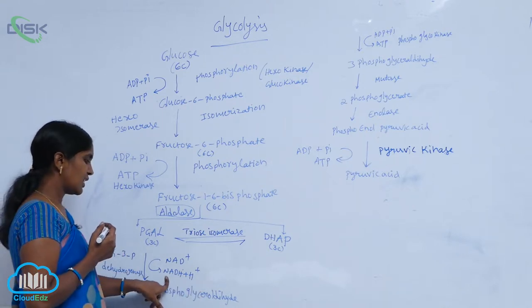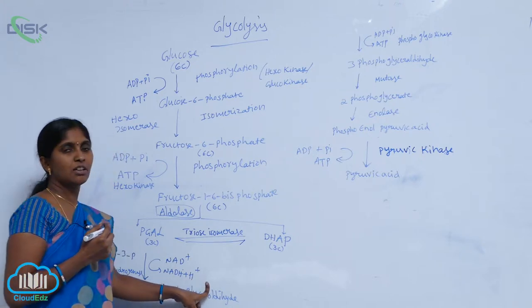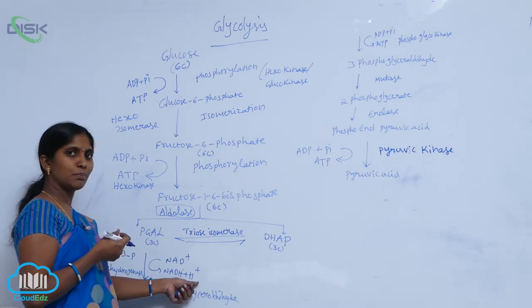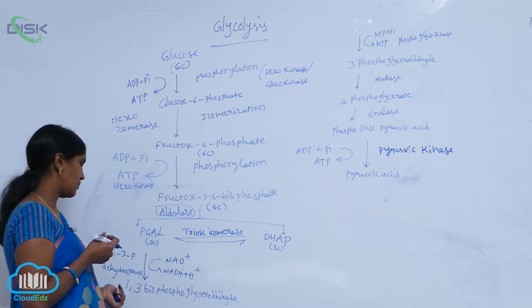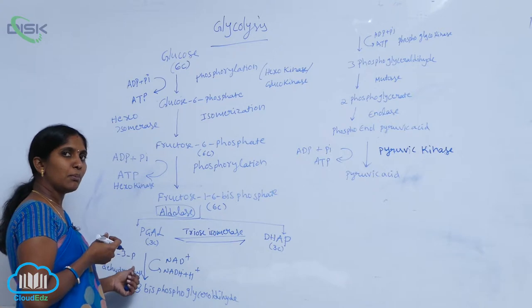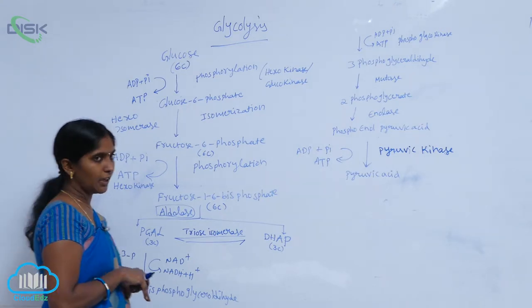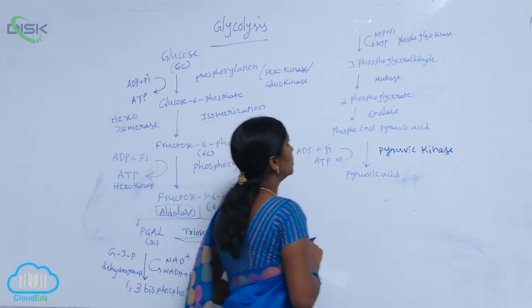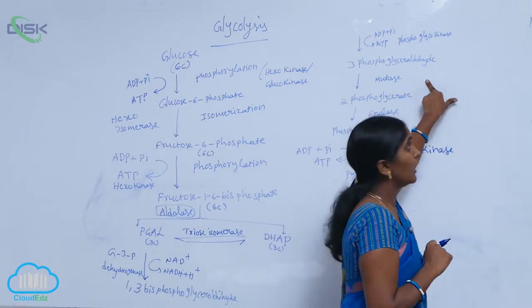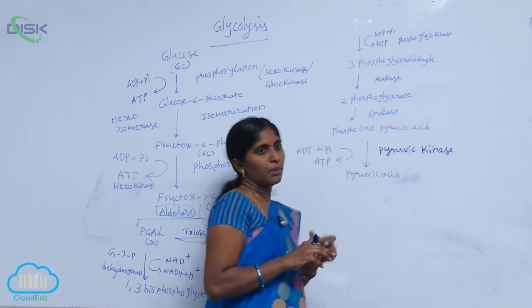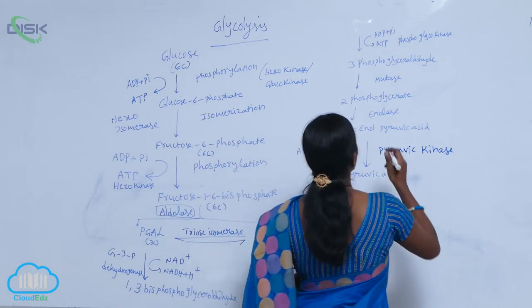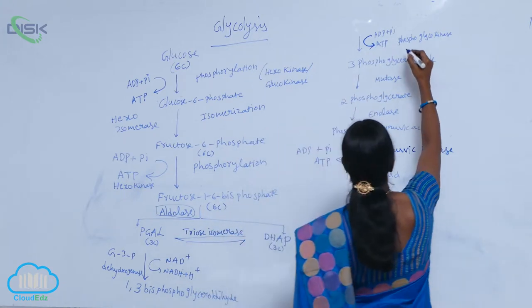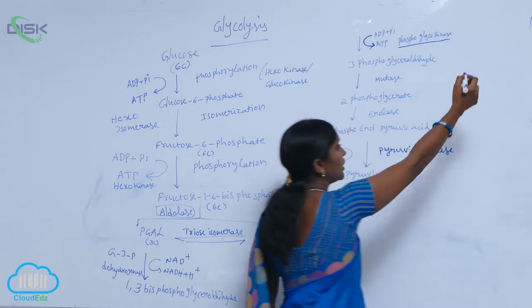This is an energy-producing reaction. NADH + H⁺ is released in the presence of the enzyme glyceraldehyde-3-phosphate dehydrogenase. Then 1,3-bisphosphoglycerate is converted into 3-phosphoglycerate, and here one ATP is released, using ADP and inorganic phosphate (Pi). This reaction is mediated by the enzyme phosphoglycerate kinase.